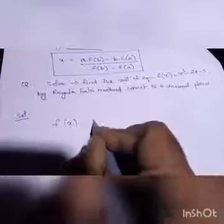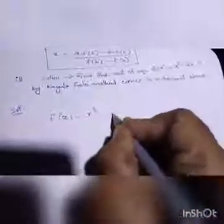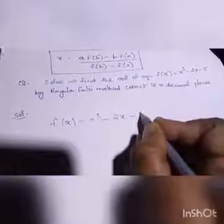So I will write it down. f(x) is equal to x cube minus 2x minus 5.